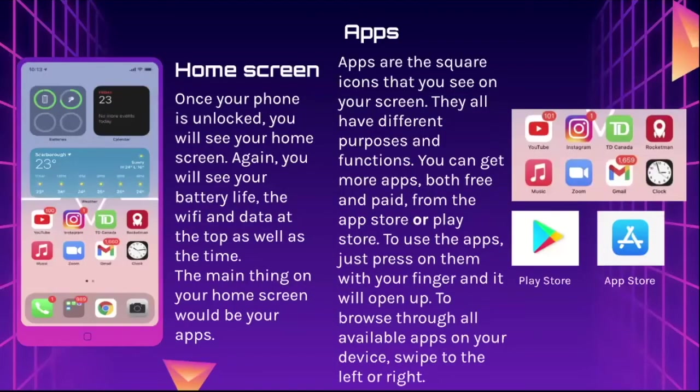The home screen is what shows when your phone is unlocked. You can see your battery life, the Wi-Fi and data at the top, as well as the time. The main thing on your home screen would be the apps you have installed — apps are the square icons you see on your screen and they all have different purposes and functions. You can get more apps, both free and paid, from the App Store or Play Store. To use an app, just press on it with your finger to open it, and you can swipe left or right to browse through all available apps on your device.